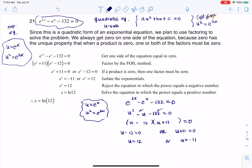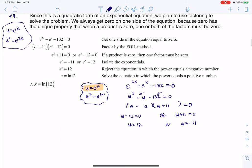But keep in mind, you started with the variable x, so you want to end with the variable x. And we do have a substitution. We know u is equal to e to the x, so let me sub this out, and I'm going to get that e to the x is 12, or e to the x is negative 11.